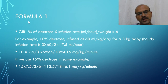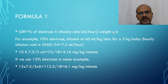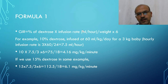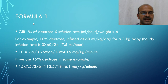There are a couple of commonly used formulas, and the principle is the same. You need to know the percentage of dextrose being infused and the rate in ml per hour, divided by the weight times 6. To get the hourly rate, take the ml per kg per day, multiply by the weight, then divide by 24.